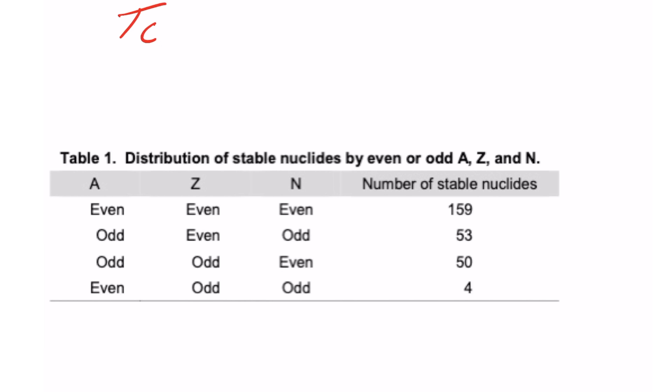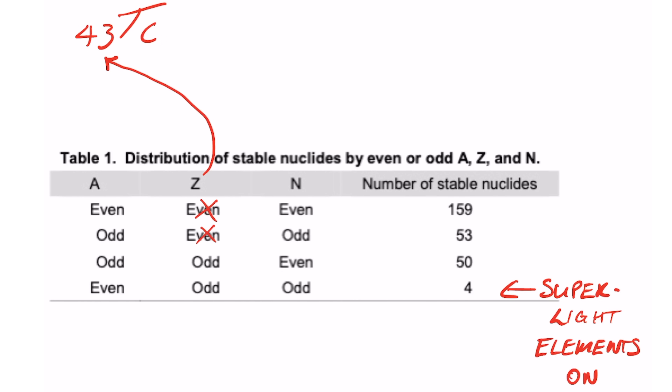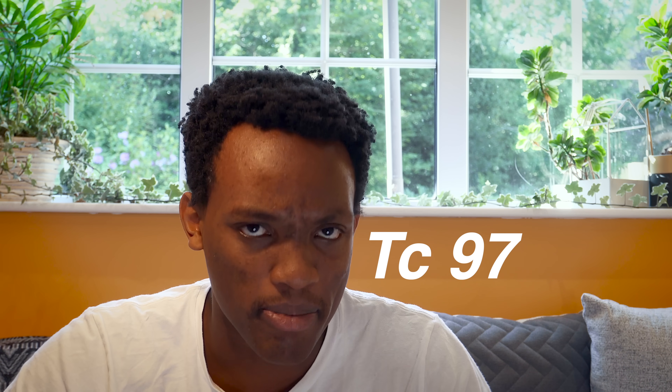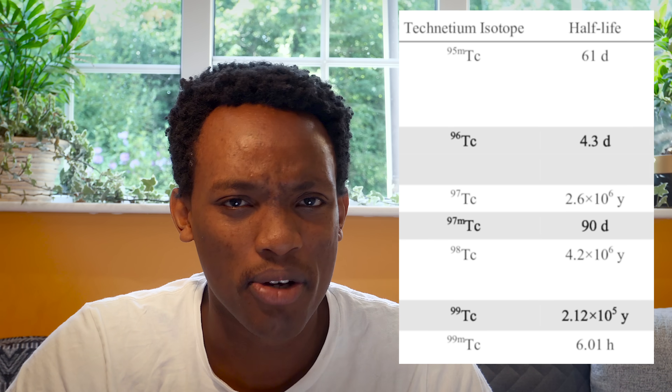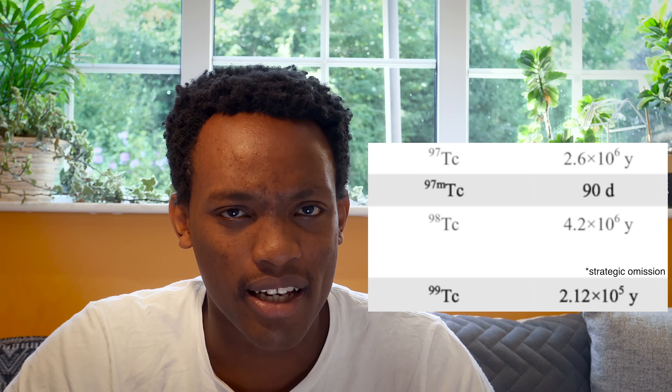For a technetium isotope to be stable, it should have a similar neutron-to-proton number ratio to nearby stable isotopes. Also, given that technetium has an odd proton number, from the table we can see that a stable isotope should have an even neutron number and an odd atomic weight. This analysis therefore predicts two stable isotopes: technetium-97 and technetium-99. But in reality, although these are the isotopes with the longest half-lives, they are still not stable.